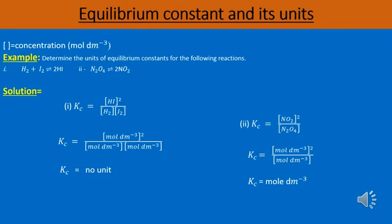In the third step we will simplify the expression. Moles per decimeter cube is 2 times in the numerator and 1 time in the denominator. Both will be cancelled and only 1 mole per decimeter cube will be left in the numerator.